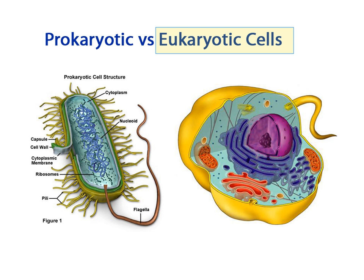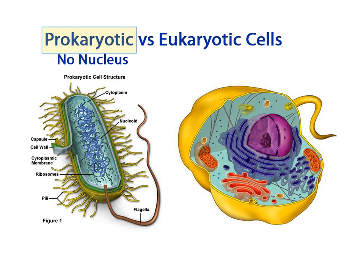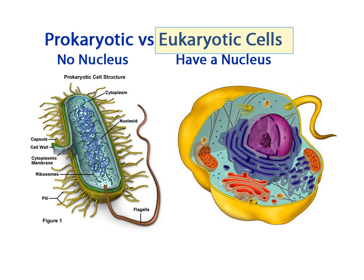The word prokaryotic means 'before the nucleus.' So prokaryotic cells describe organisms whose cells do not have a nucleus in them. The opposite of a prokaryote is a eukaryote, which is an organism whose cells do have a nucleus.